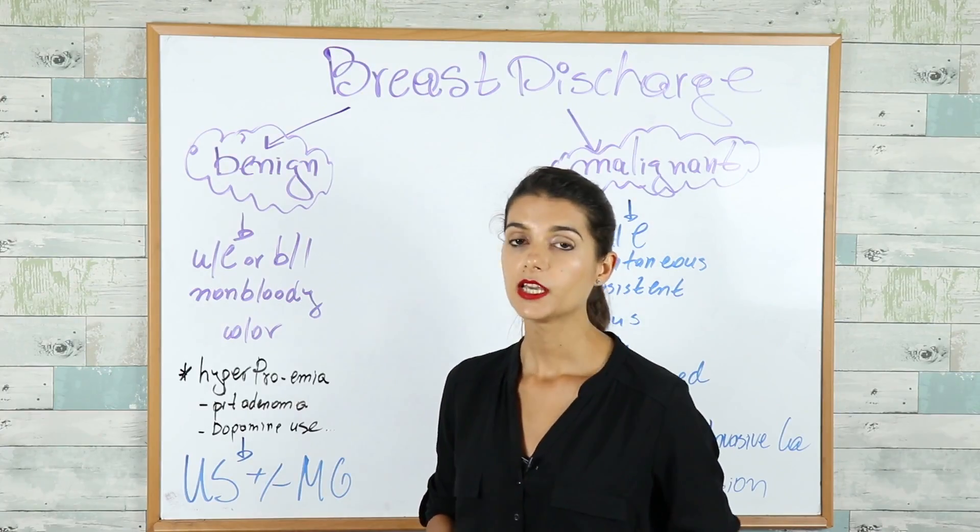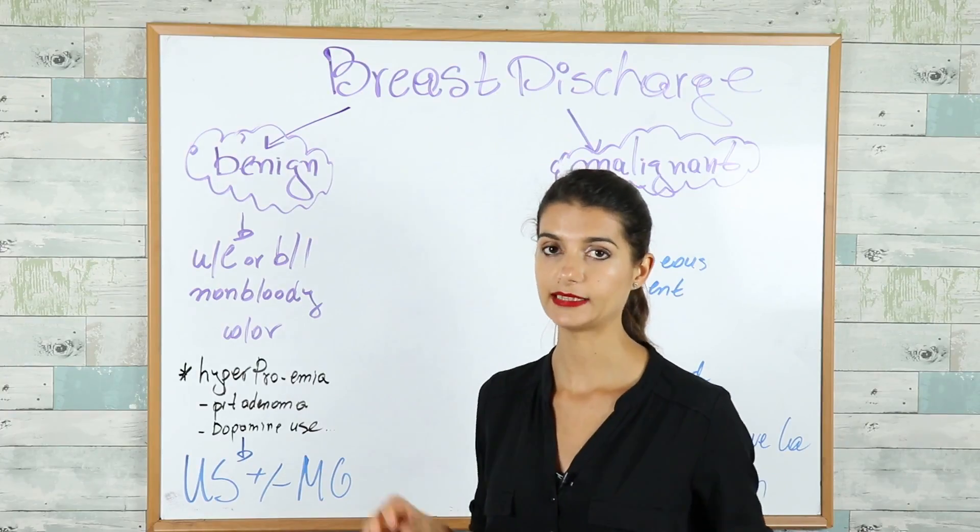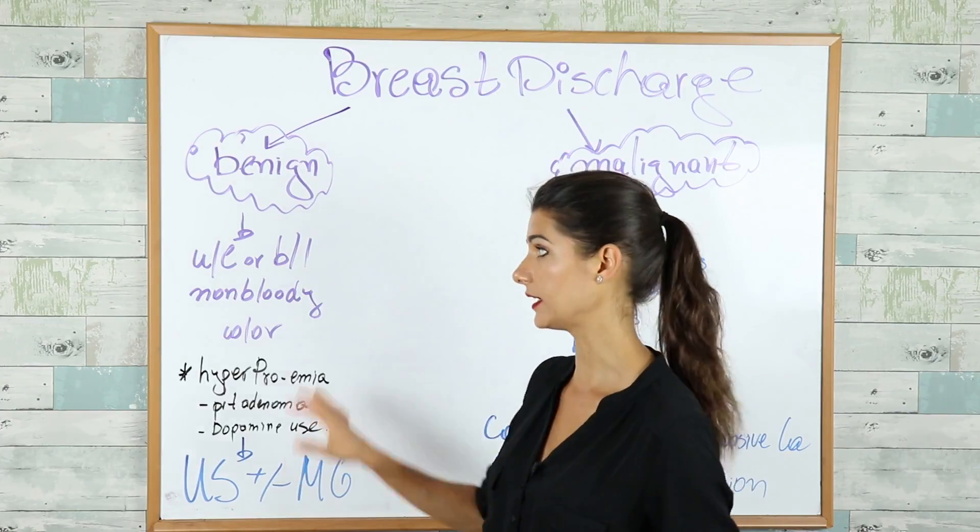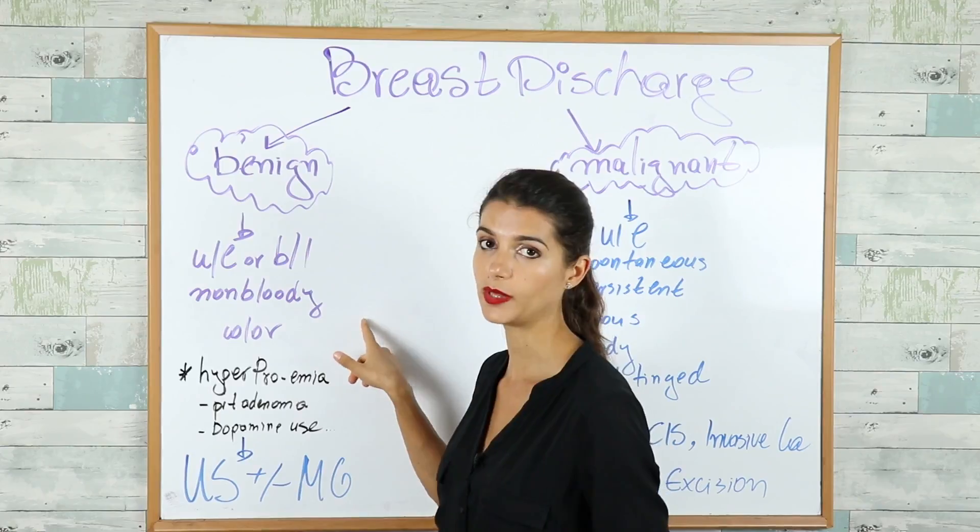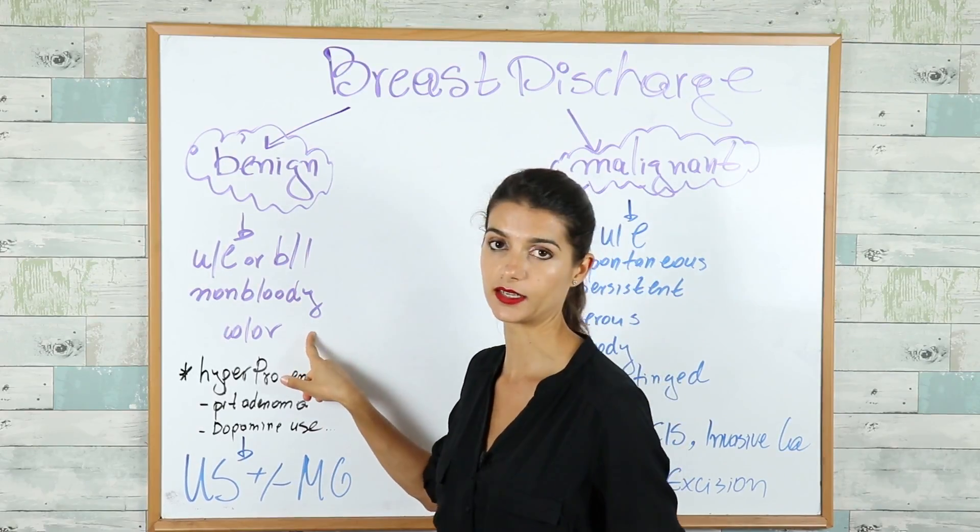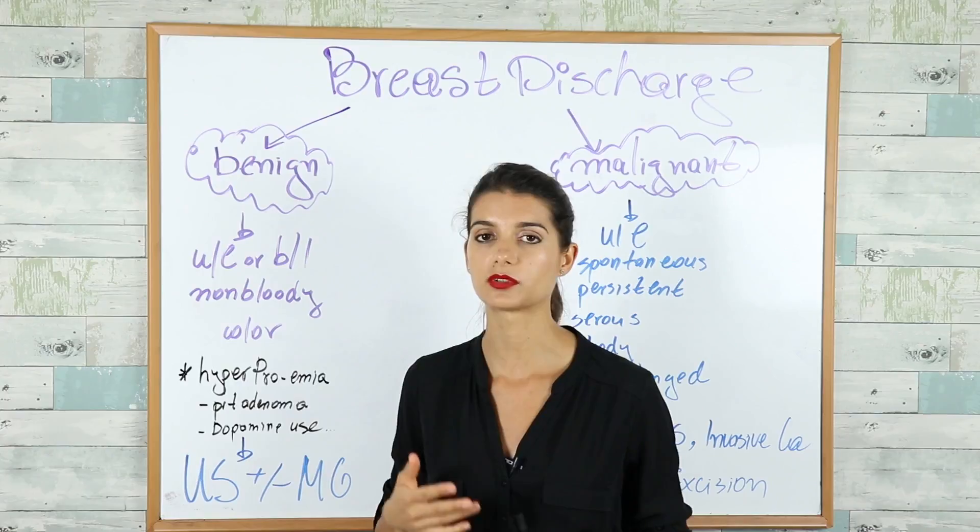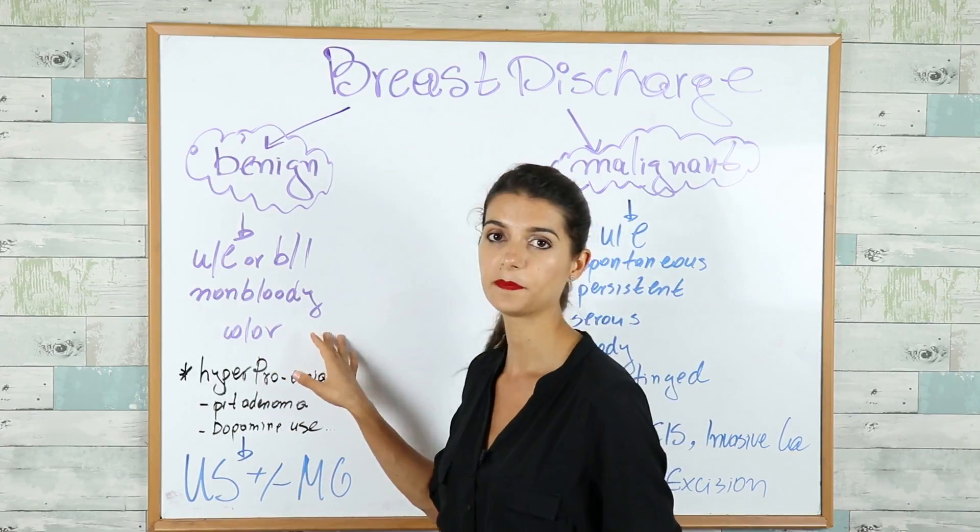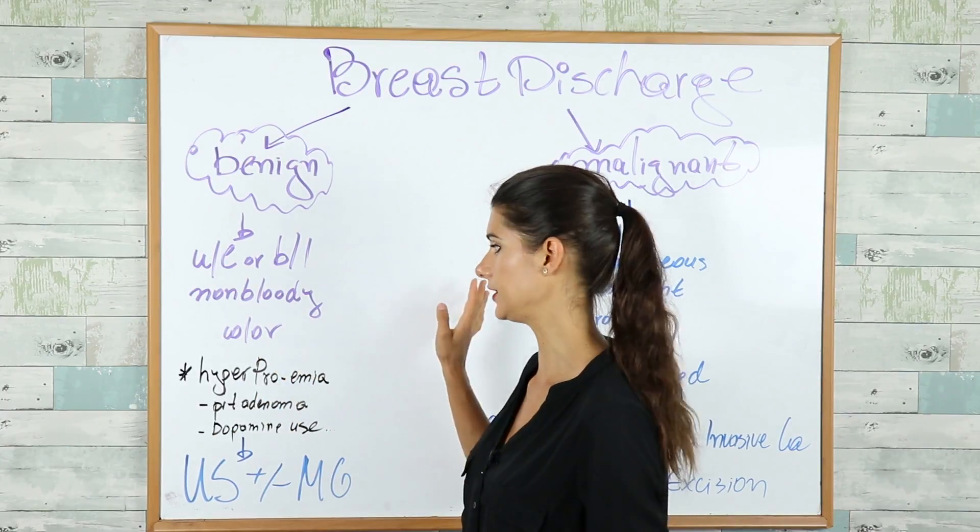Moving on to breast discharge. If you find breast discharge in a woman at any age which is described as unilateral or bilateral, non-bloody and being any other color than red, including gray or green or yellow or milky, then it's probably benign lesion.